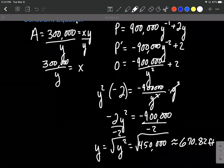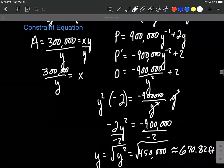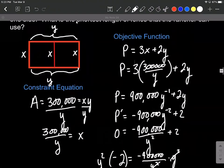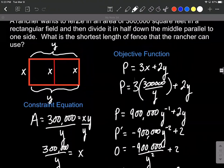I am going to use the exact answer as we finish this up and find the minimum amount of fencing and the dimensions though. So we know y is that square root of 450,000.